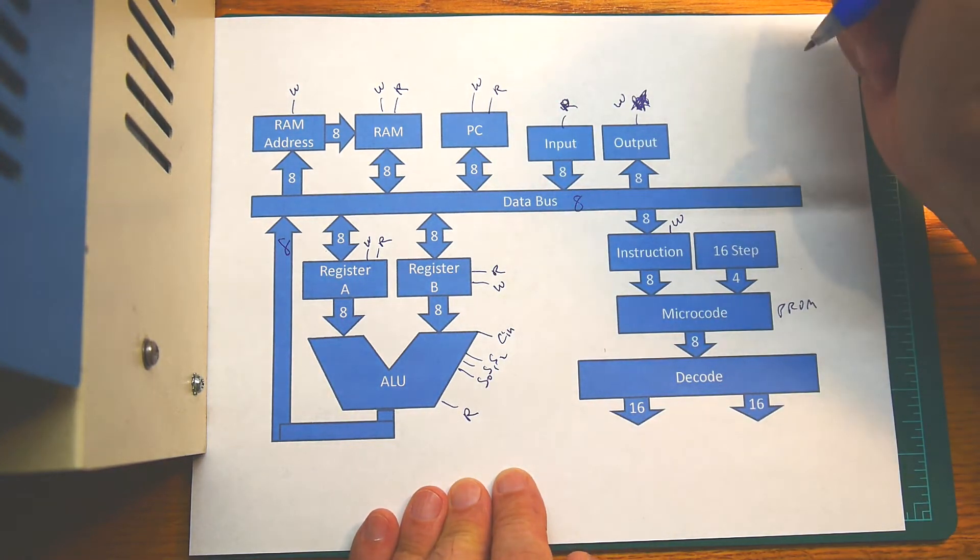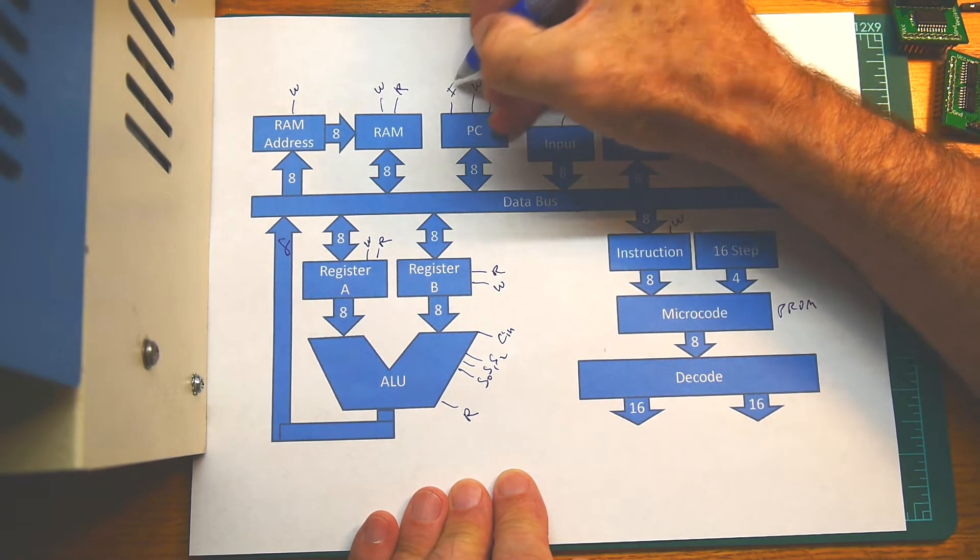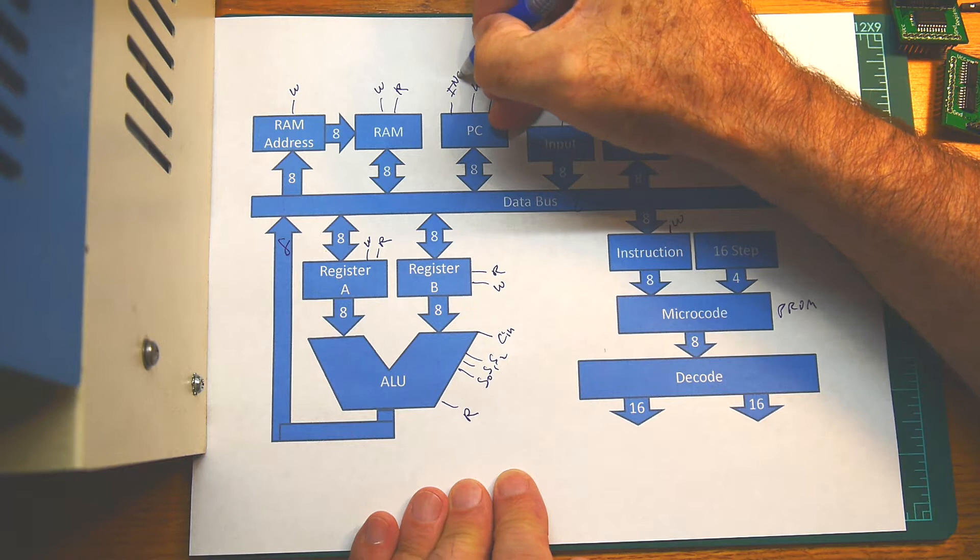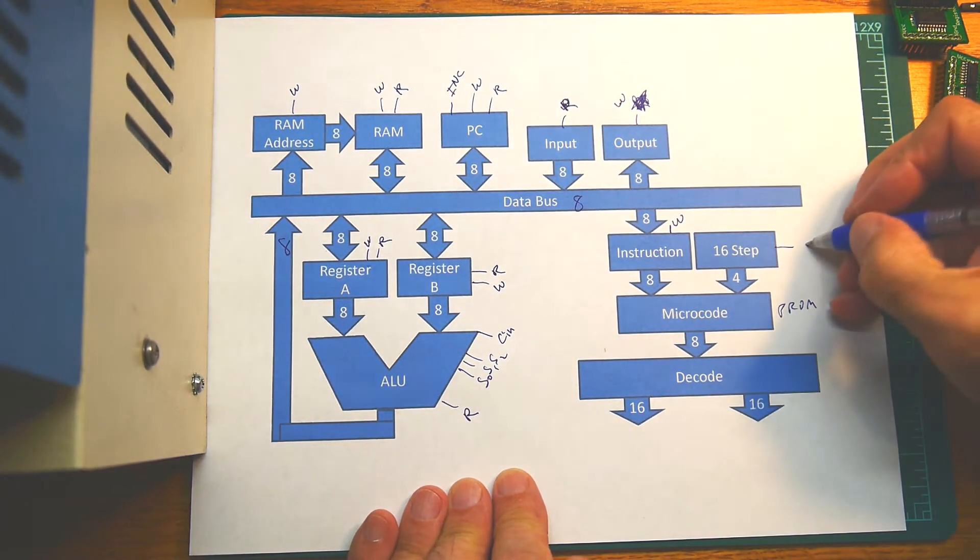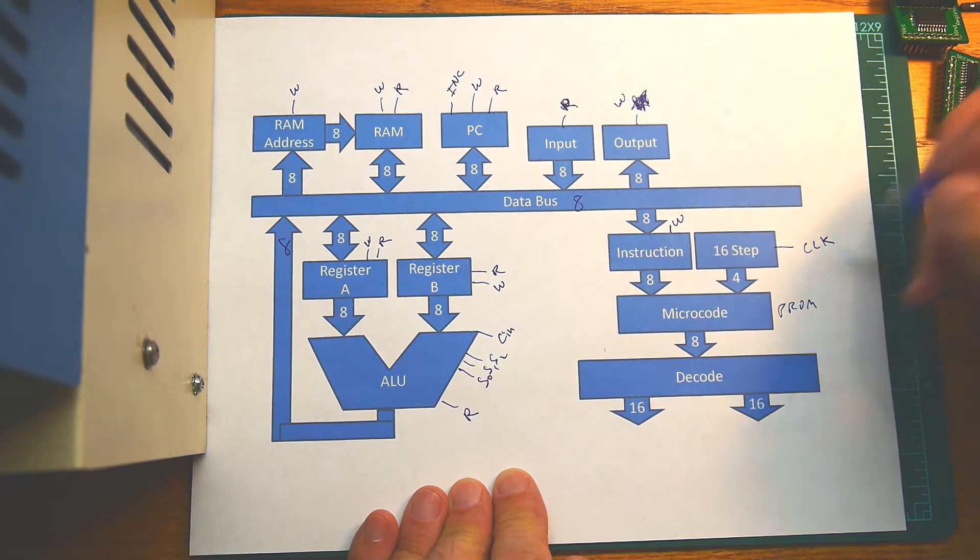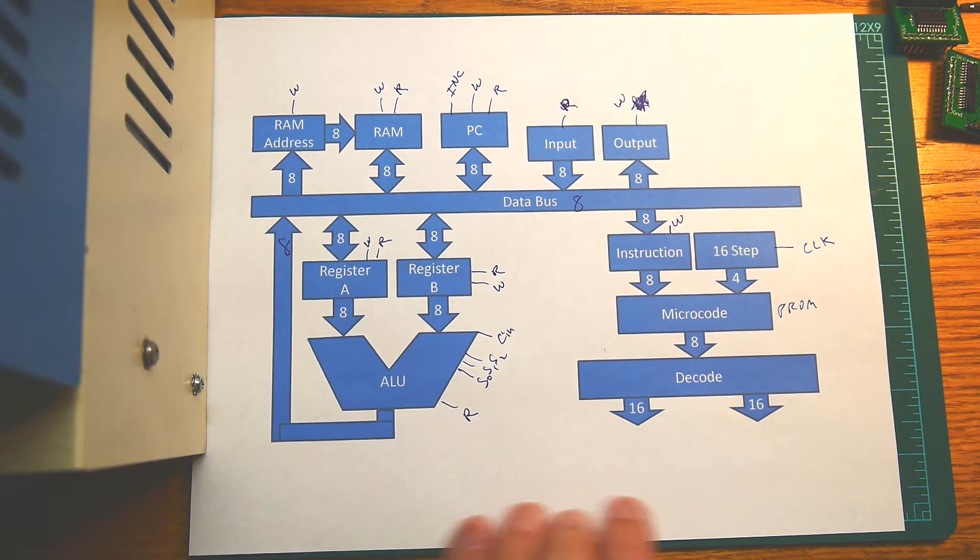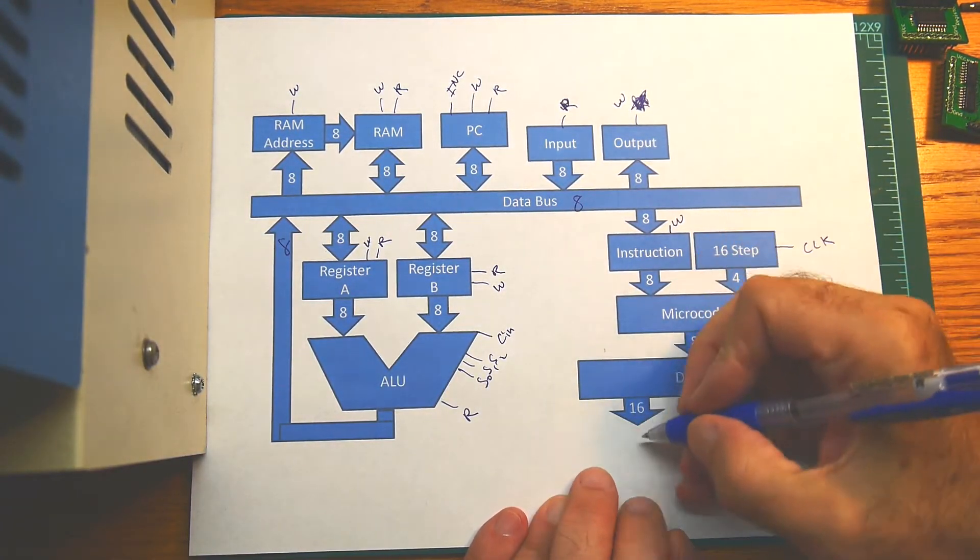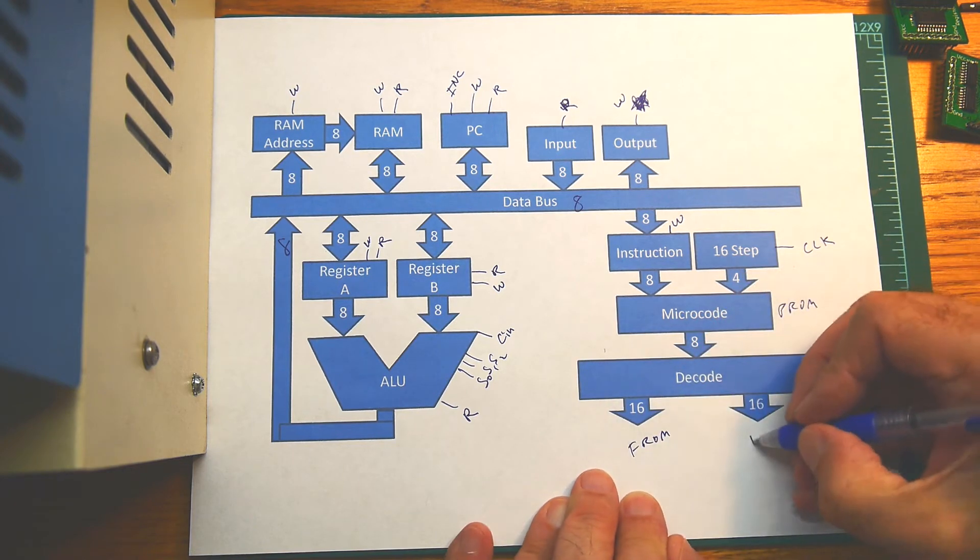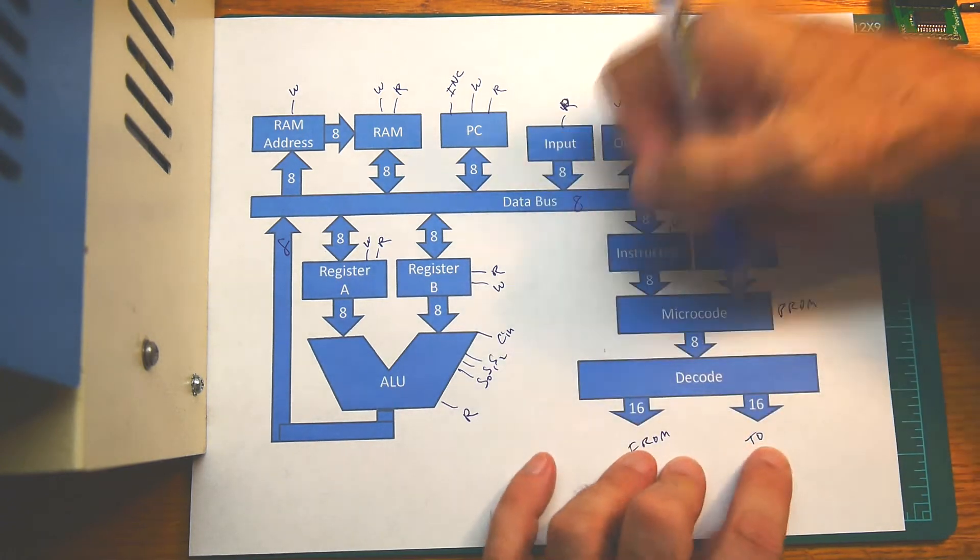The ALU also has S0, S1, and S2, and carry-in, so those need to come from some place. The program counter has an increment to go to the next location. Step has a clock. So all of these read-write signals come from here. We have a FROM and a TO. So the FROMs are reads, the TOs are writes.